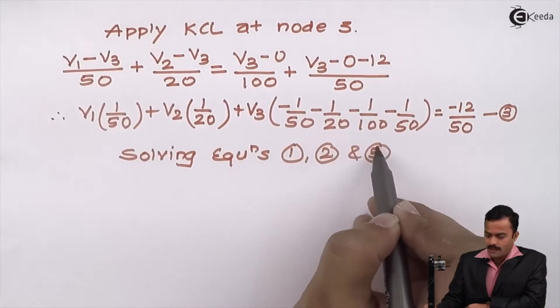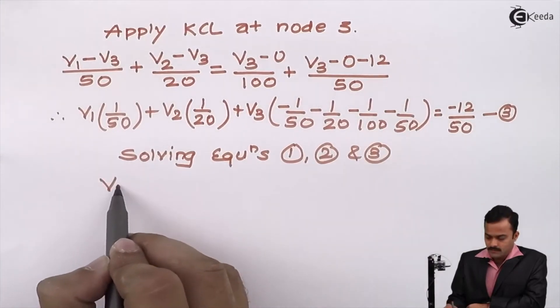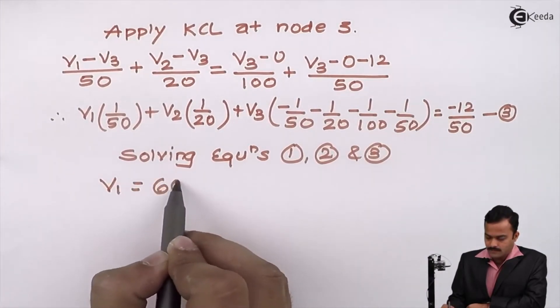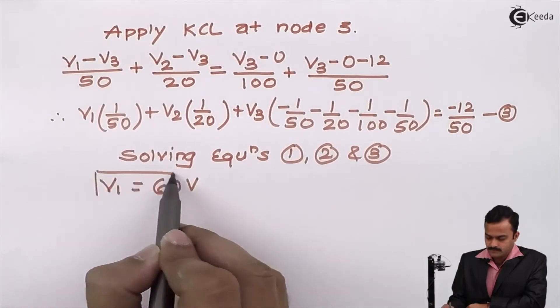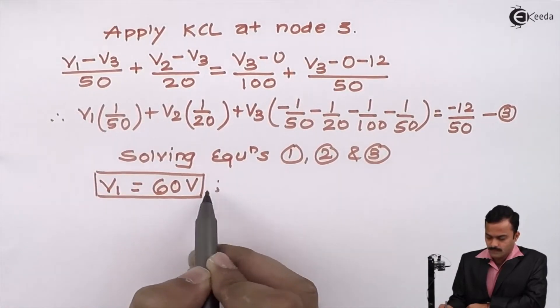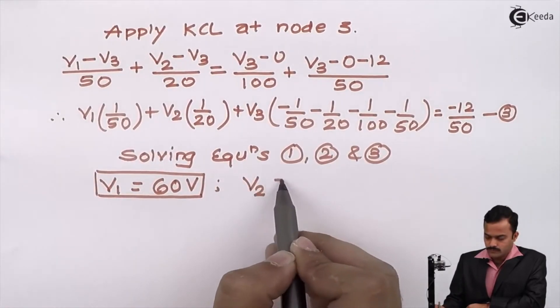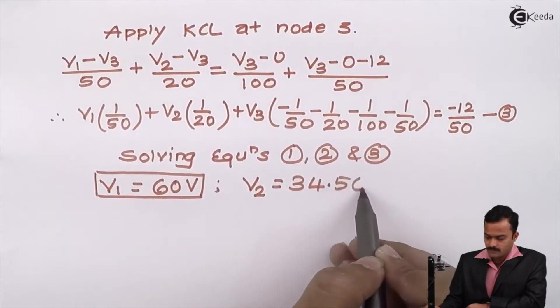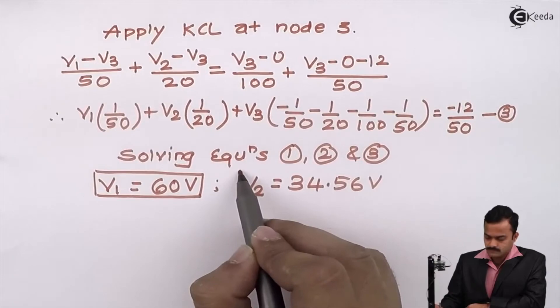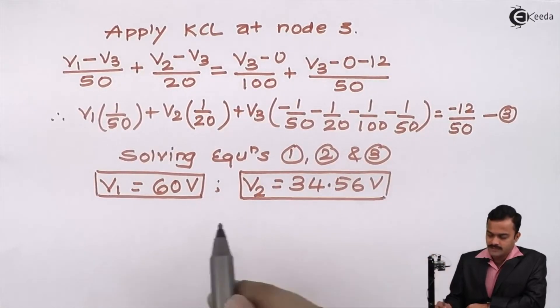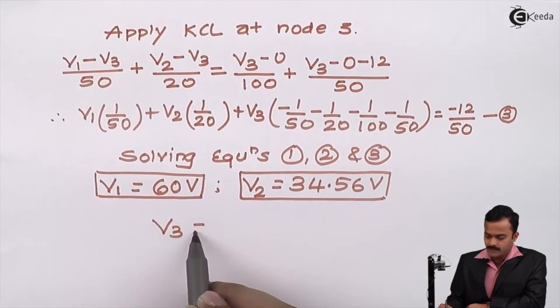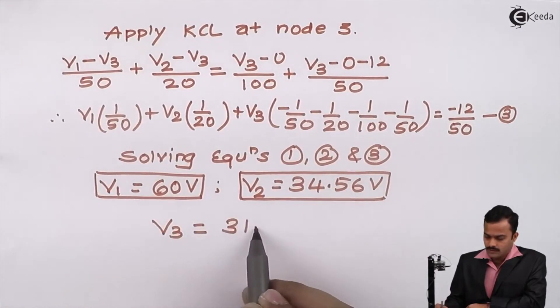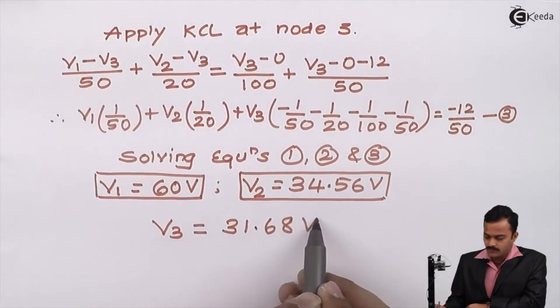After solving equations 1, 2, and 3, I can get V1 as 60 volts, V2 equal to 34.56 volts, V3 equal to 31.68 volts.